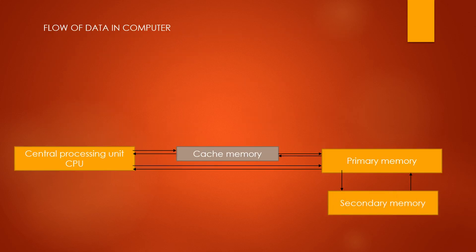Now we will see the flow of data in a computer. Cache memory is the buffer memory directly connected to the central processing unit. Primary memory is the main memory of the computer that can be directly accessed by the CPU. However, secondary memory has no direct connection with the CPU — the data must first be loaded into primary memory and then it can be accessed by the CPU.